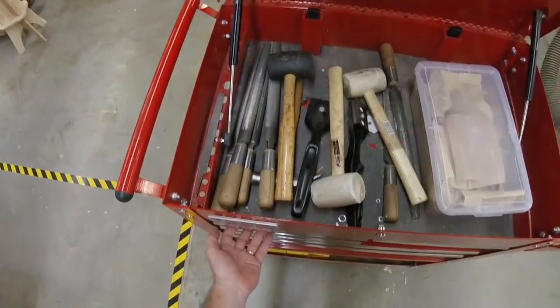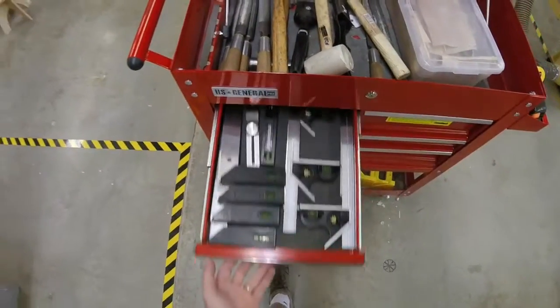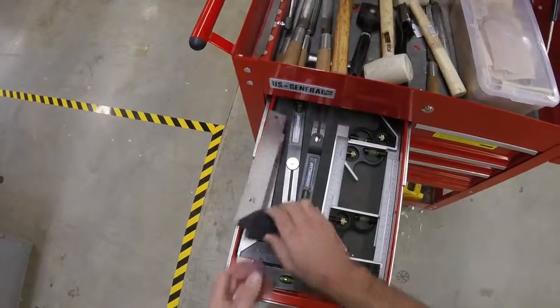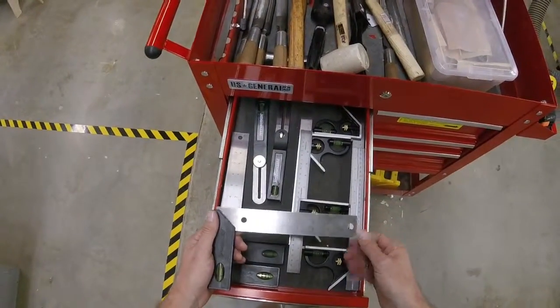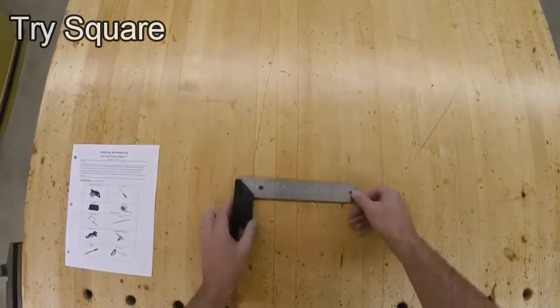The last tool on our list is a tri-square. It's in this top drawer with the combination squares. So a tri-square functions the same, except that it's not adjustable.